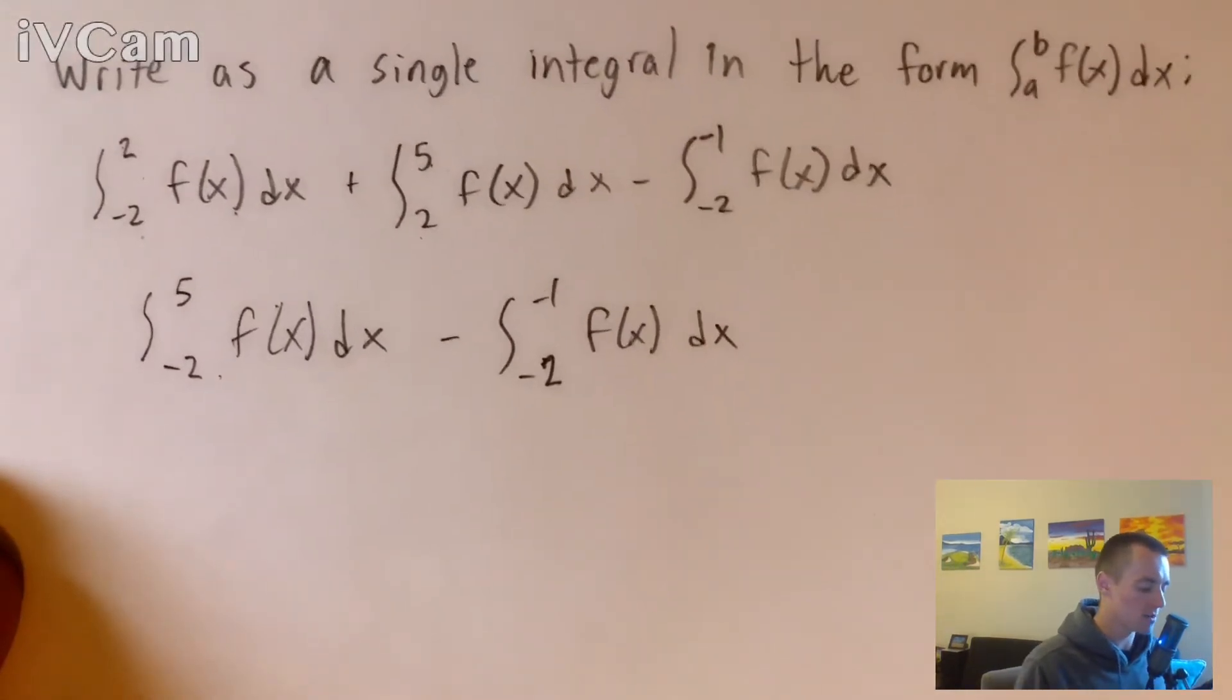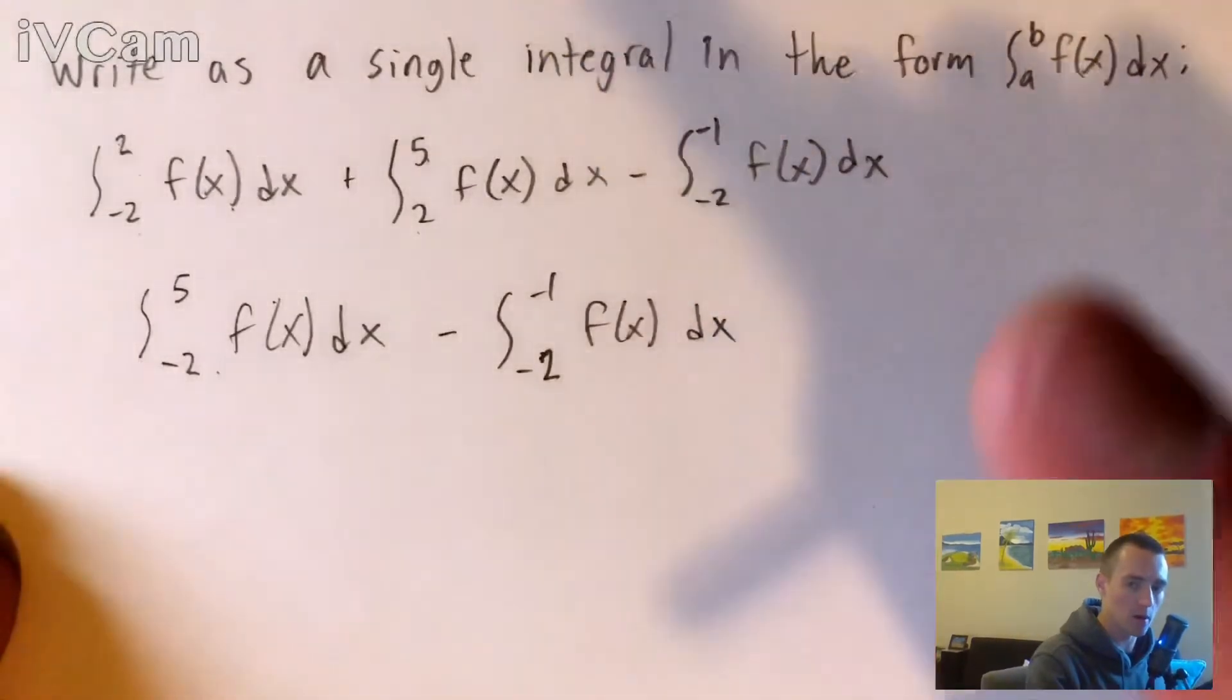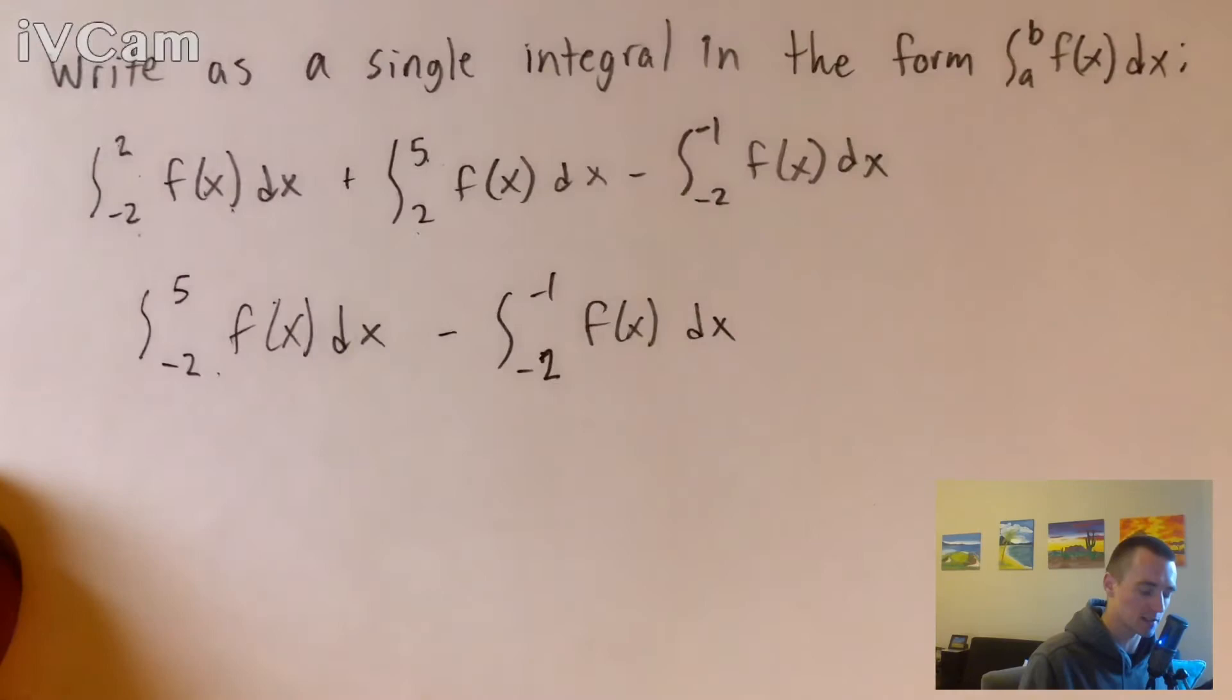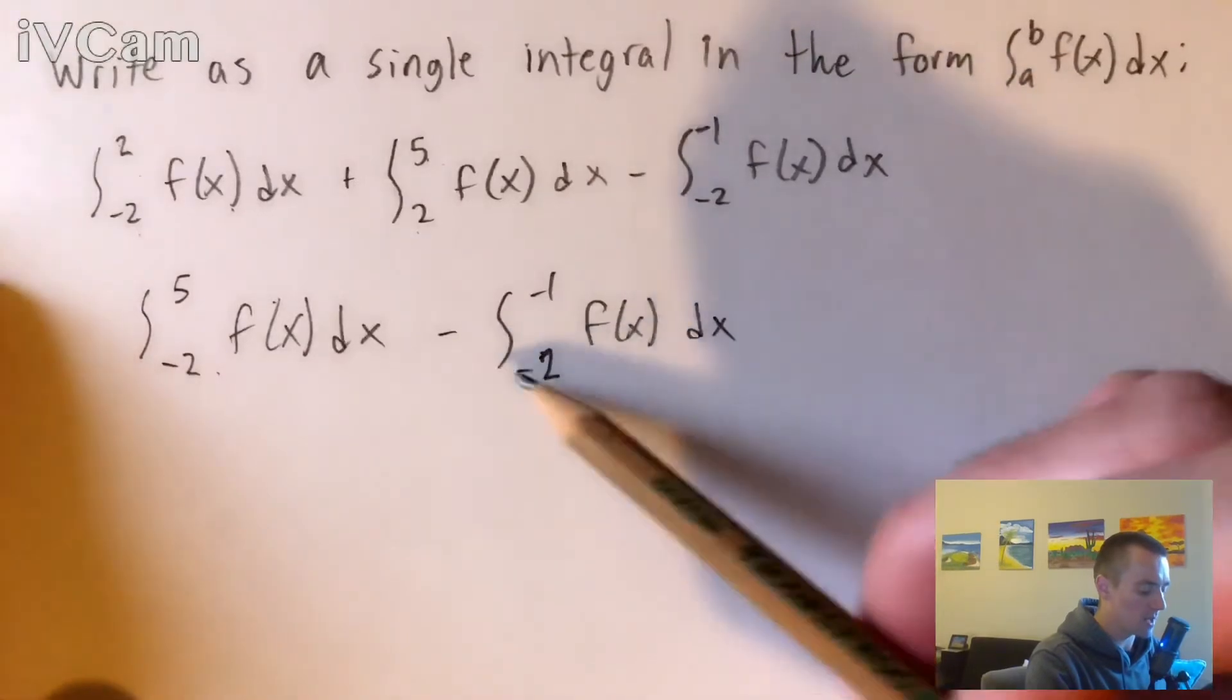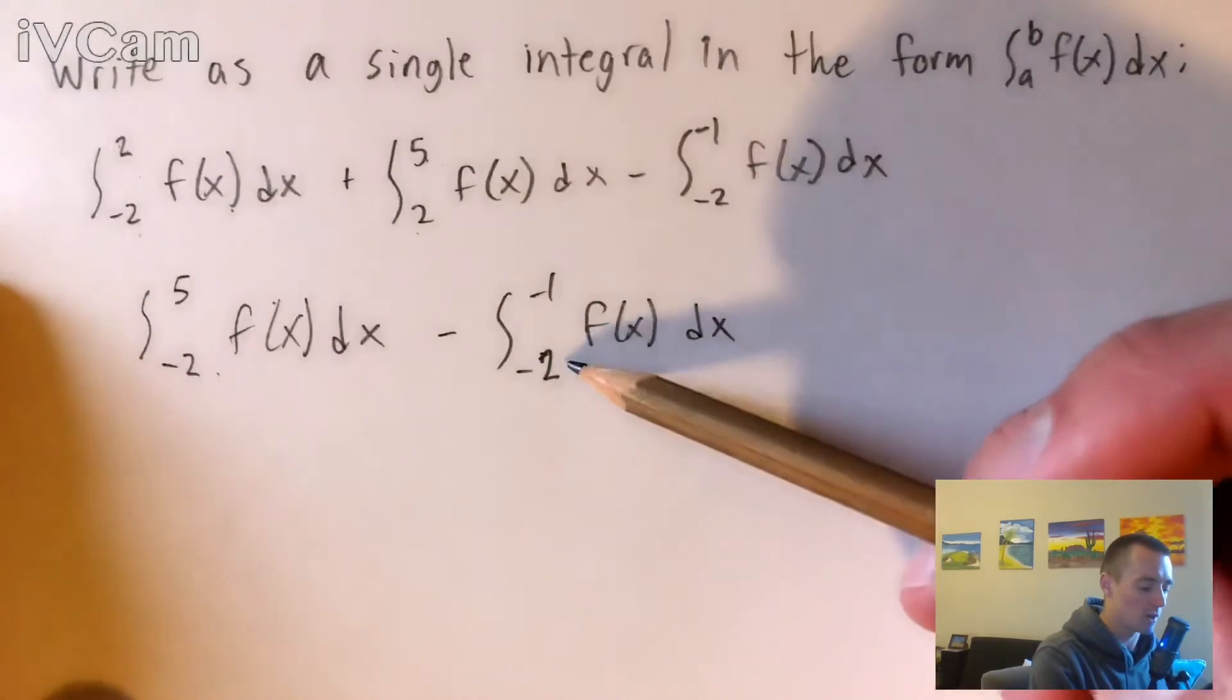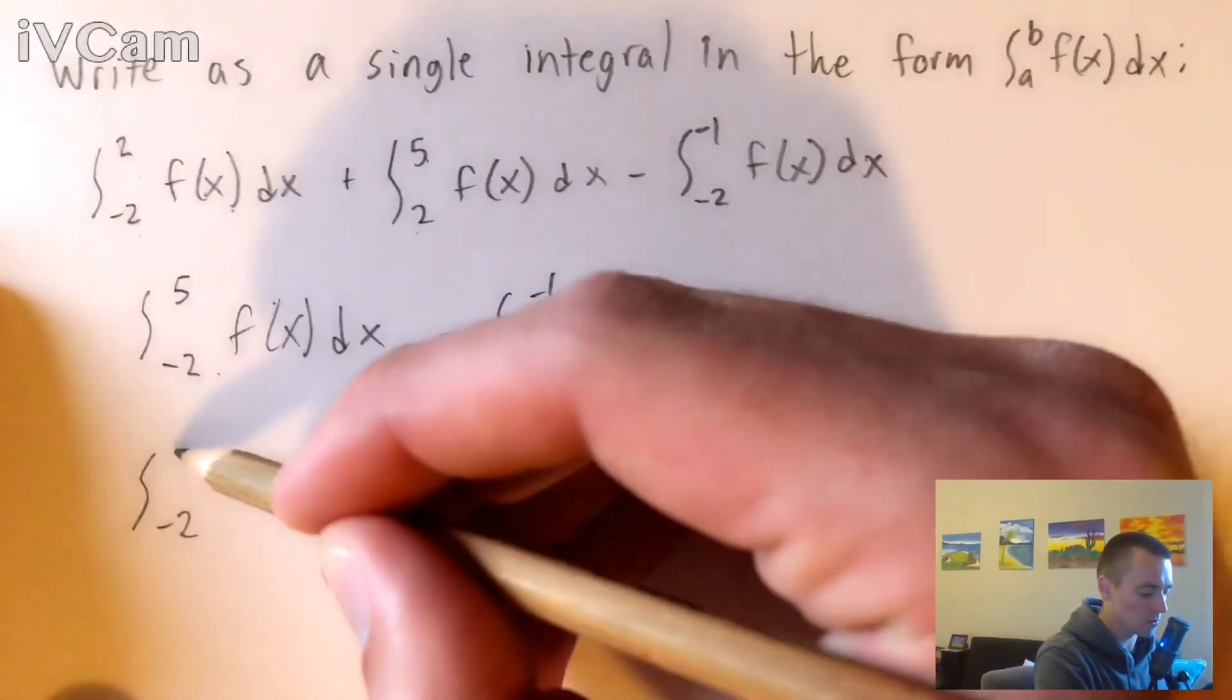But what we can do is rewrite one of these integrals in a way that will flip the upper bound and the lower bound so that we can reuse that same property again. The property we're going to use here basically says that if we make an integral negative - so this one's already negative, making it negative will just make it positive - we can flip the bounds. We're not going to touch this left integral quite yet.